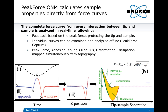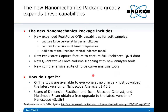Peak force QNM works by examining all the data collected during each cycle. Instead of just looking at the peak force for feedback, the QNM part has access to the whole force curve, so we can calculate different properties very easily. We can look at the peak force, the adhesion, the modulus by fitting the contact part of the curve, the deformation of the sample — which is the difference between the first contact and deformation at maximum force — and also the dissipation, which is often dominated by the work of adhesion.